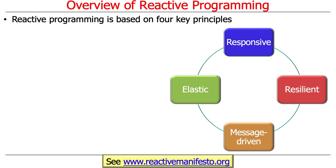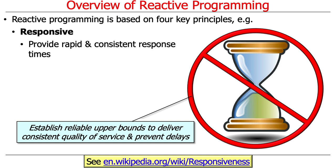Principle number one is responsive. The idea is you want to provide rapid and consistent response times to end users — you don't want the dreaded hourglass or spinning wheel indicating something is taking a long time. This still happens for long-running operations not properly programmed to take advantage of background threads and parallel processing. The goal is to establish reliable upper bounds, give users a consistent quality of service, and prevent undue delays without blocking.